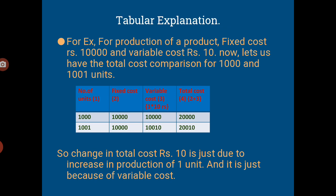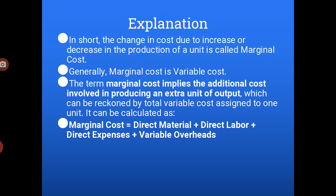I also explained this table. Starting from 1000 units to 1001 units of production — what is the change in total cost? That is rupees 10. So an increase in production of one unit results in a change of rupees 10 in the total cost. That represents the marginal cost. This is again the explanation of how marginal cost is examined or calculated.